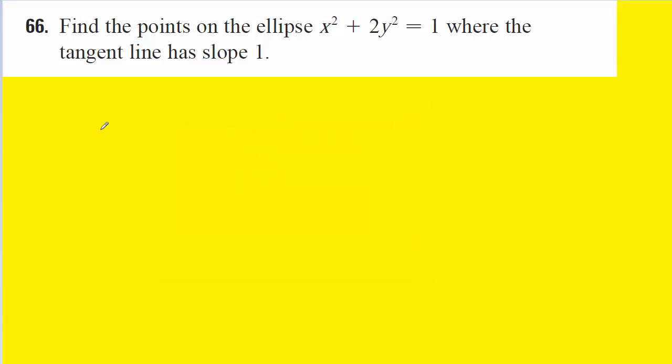As always, if you haven't yet read the question, please pause the video and do so now. We are asked to find the points on an ellipse where the tangent line has a slope of 1.